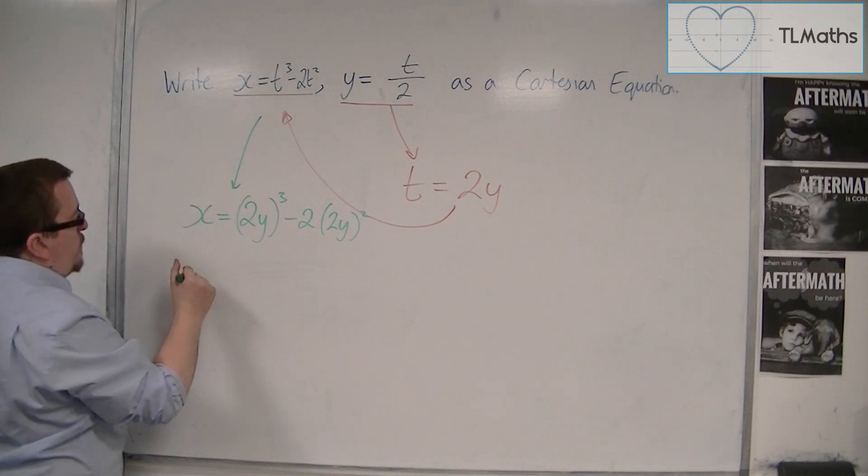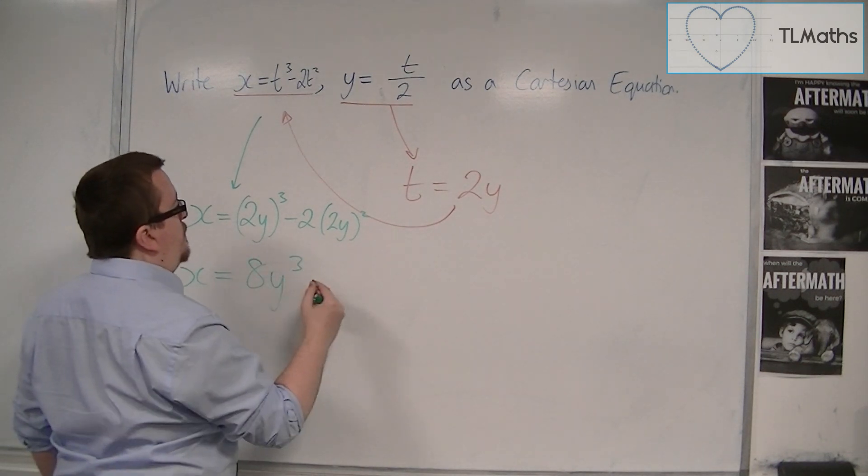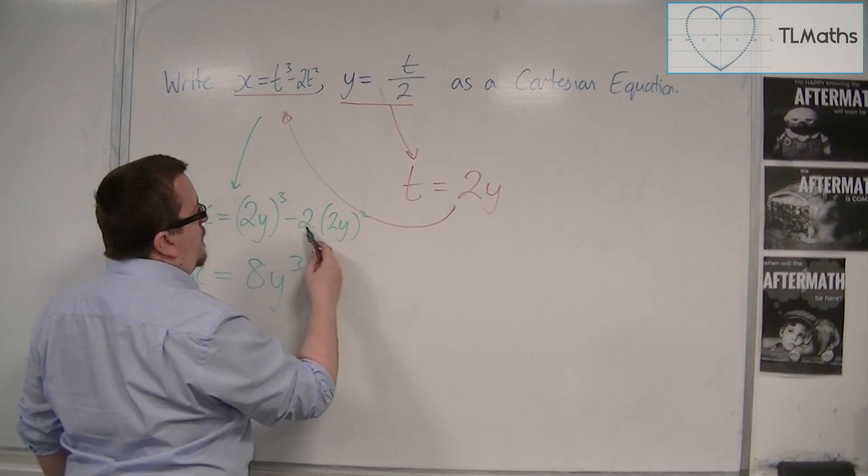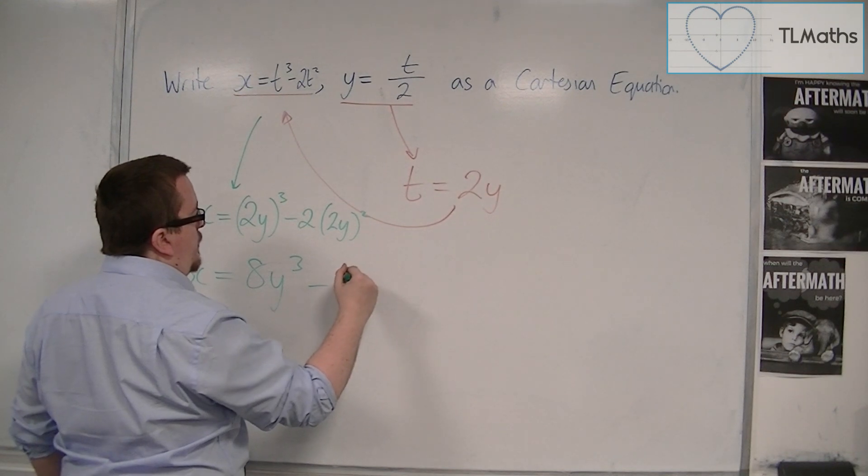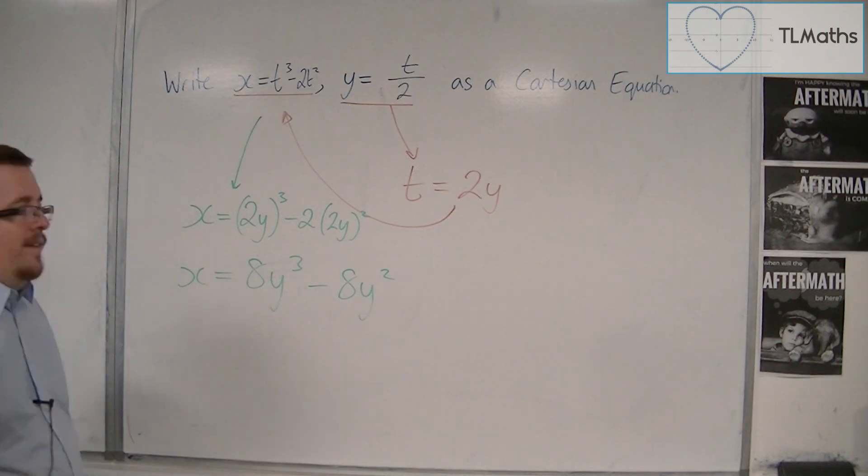So I would probably expand this one out and write it as 8y³, take away 2 lots of 4y², so 8y². And I'd probably leave it like that.